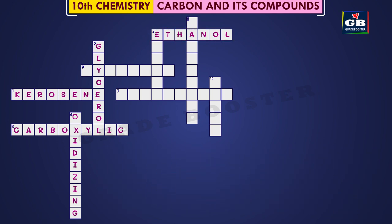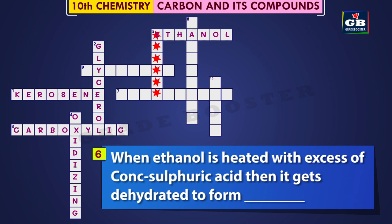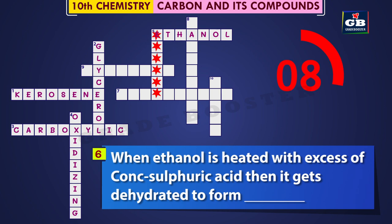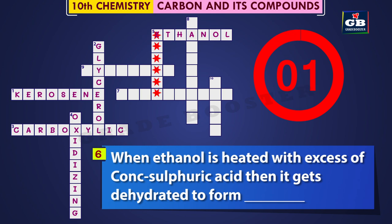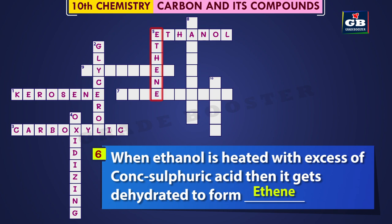6 Down: When ethanol is heated with excess of concentrated sulfuric acid, then it gets dehydrated to form dash. Do you know the answer? Ethene. When ethanol is heated with excess of concentrated sulfuric acid, then it gets dehydrated to form ethene.